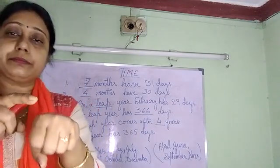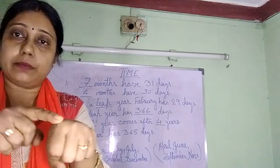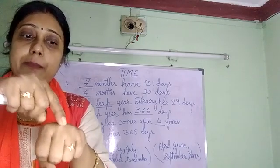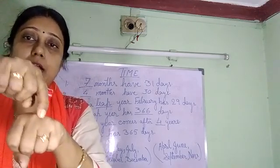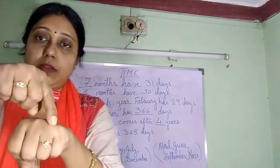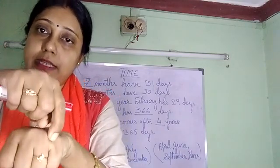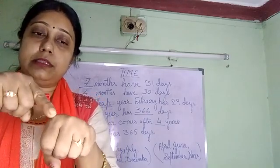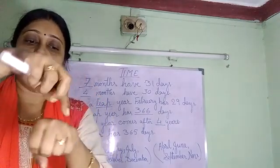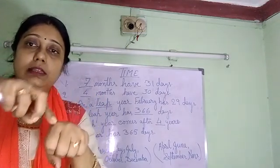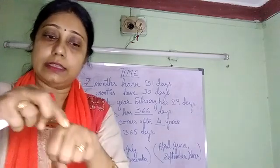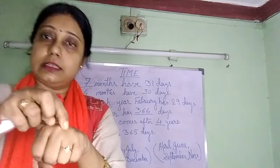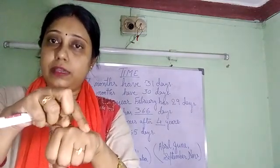Let me count from the beginning. January is on the top — that means 31 days. February is down — that means 28. March is up — that means 31. April is down — 30 days. May is up — 31 days. June is down — 30 days. July is up — 31 days. August is again on top — 31 days. So July and August both have 31 days. September is down — 30 days. October is up — 31 days. November is down — 30 days. December is up — 31 days.